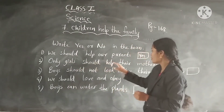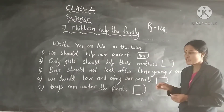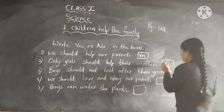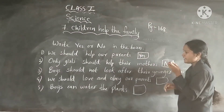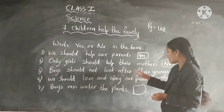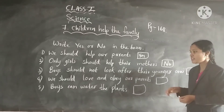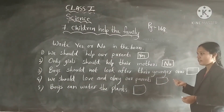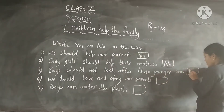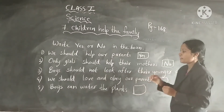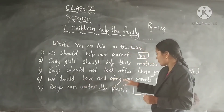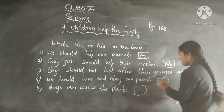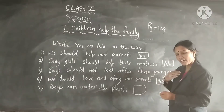Second: Only girls should help their mothers. S or No? No — boys also help their mothers. Third: Boys should not look after their younger brothers and sisters. No — this is wrong. Fourth: We should love and obey our parents. Yes — we should love and obey our parents.